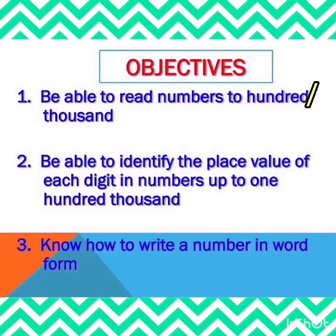I hope from this lesson we'll be able to read numbers from the 100 and 1000 position, identify the numbers and the place value of each digit, and write the numbers in words, in expanded form, and in standard form. That was the objective of this lesson. So I hope students, from this whole lesson, we must have learned number names, place value, and expanded form.